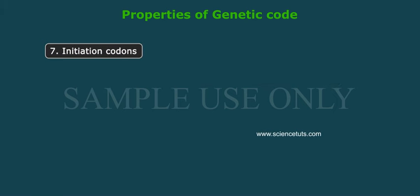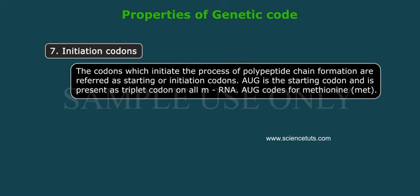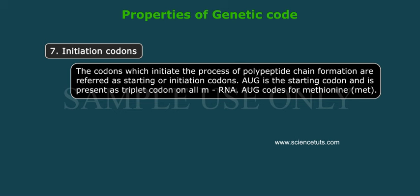Property 7: Initiation codons. The codons which initiate the process of polypeptide chain formation are referred to as starting or initiation codons. AUG is the starting codon and is present as a triplet codon on all mRNA. AUG codes for methionine (MET).